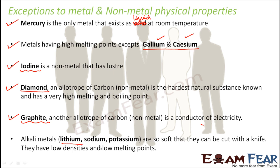Alkali metals like lithium, sodium, and potassium are so soft that they can be cut with a knife, and they have low densities and low melting points. Most metals are hard, but these are exceptions. This is why, based on physical properties alone, we cannot determine whether a substance is a metal or nonmetal, because different metals behave differently. We classify a substance as a metal or nonmetal depending on whether it is electropositive or electronegative in nature.